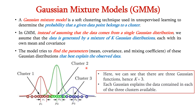This diagram illustrates the concept of Gaussian mixture models. Here we can see that there are three Gaussian functions — brown, green, and blue — hence k is equal to 3. Each Gaussian explains the data contained in each of the three clusters: cluster 1, cluster 2, and cluster 3.